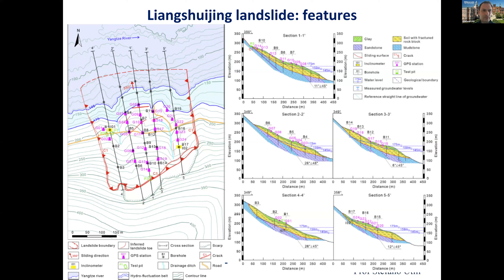The phreatic line — the position of the groundwater table — is very important for this landslide. It has been determined and drawn based on measurements from nine boreholes and then interpolated between them.